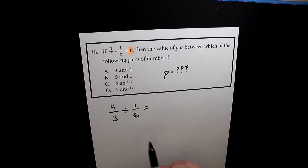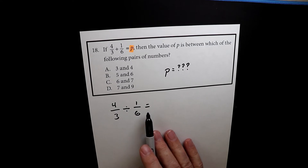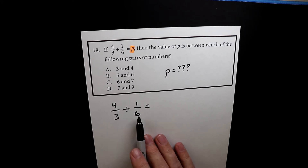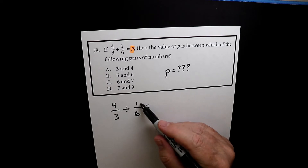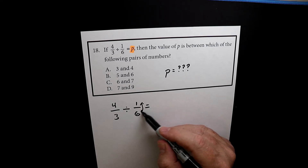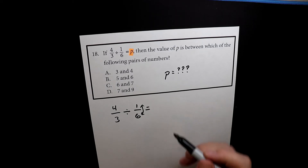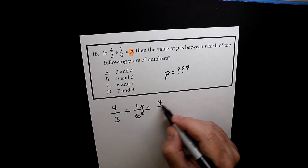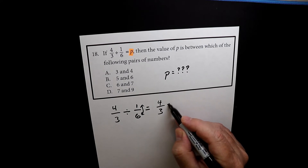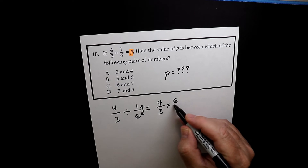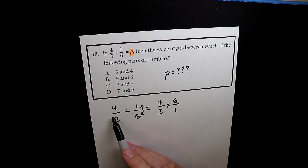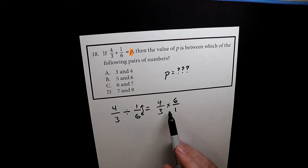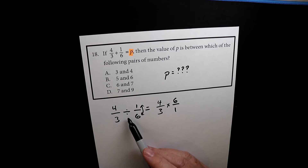You may remember from middle school that when you divide a fraction, you take the second number, flip it upside down, and turn it into a multiplication problem. You're going to flip the 6 and the 1 and turn it into a multiplication problem. So I have 4 over 3 — that stays the same — but now I'm going to multiply by 6 over 1, because I keep the 4 over 3 and flip the 1 over 6.